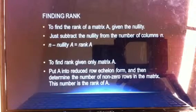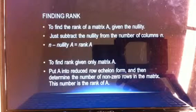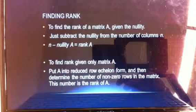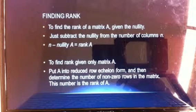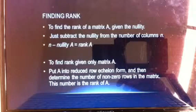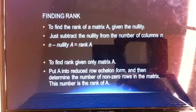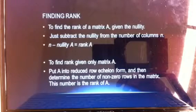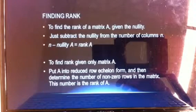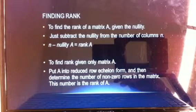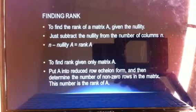However, if you aren't given the nullity of the matrix, to find the rank of A given only the matrix, you put A into reduced row echelon form and then determine the number of non-zero rows in that matrix. This is the rank of A. So, if you put it into reduced row echelon form, you're going to have leading ones in each row.